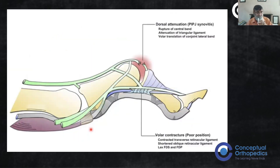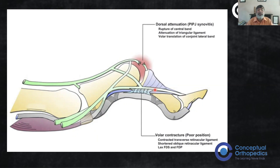To summarize boutonniere deformity: you have central slip rupture, lateral bands subluxed volarly, the transverse retinacular ligament contracted, and this causes hyperextension at the DIPJ as a secondary deformity. That is all you need to know about boutonniere deformity.